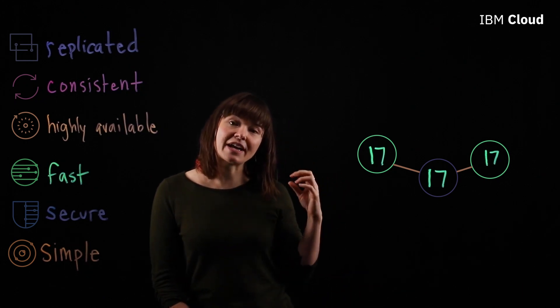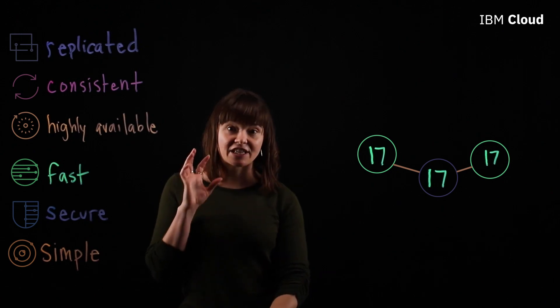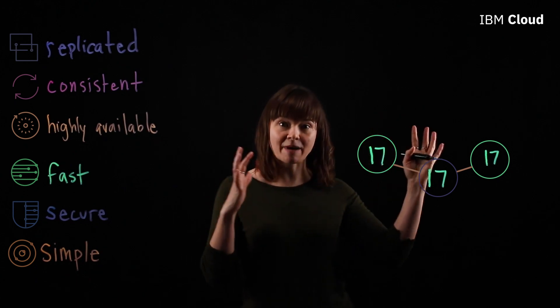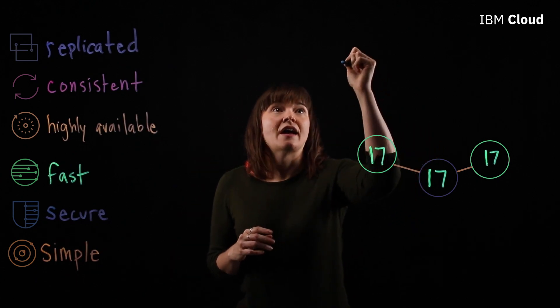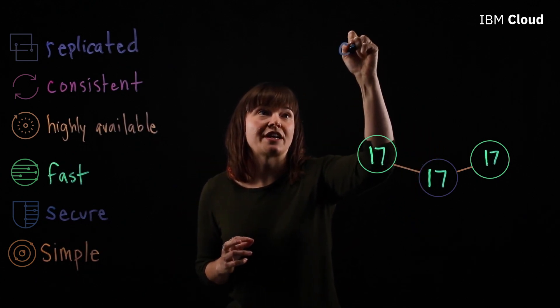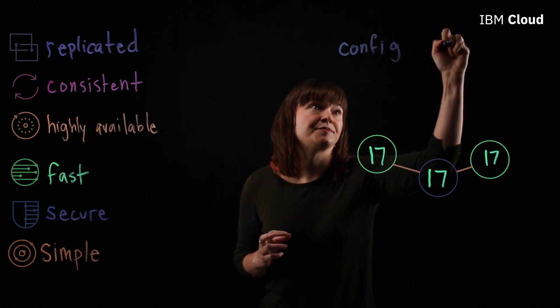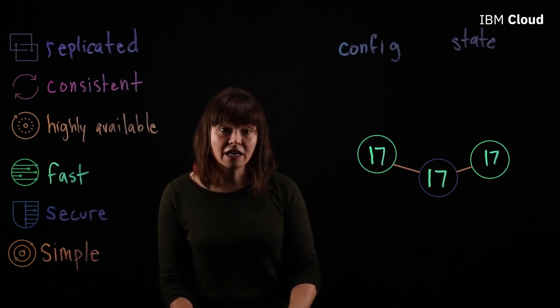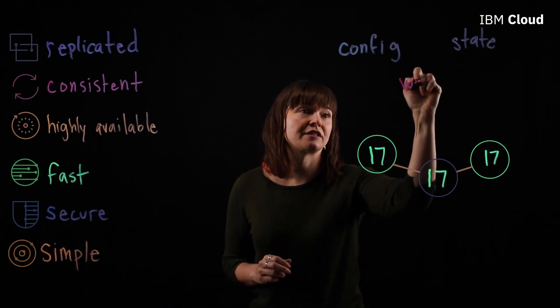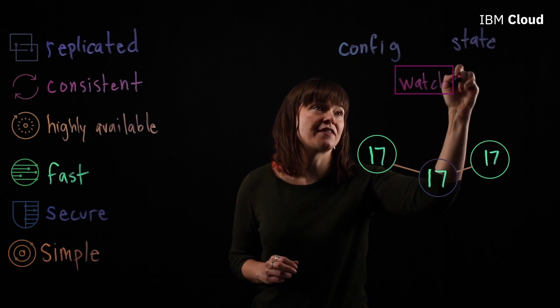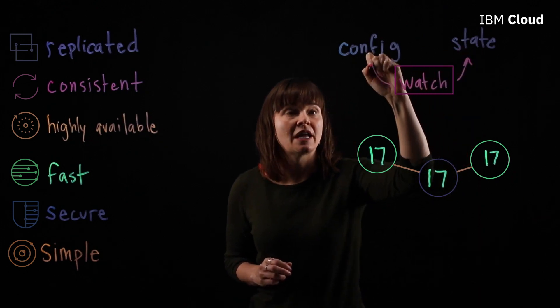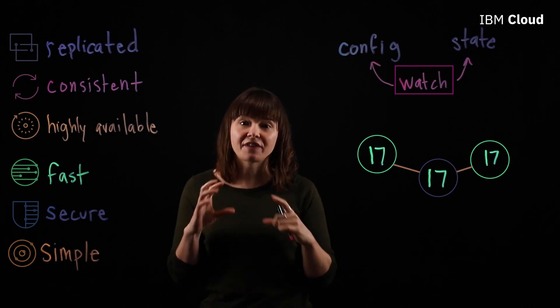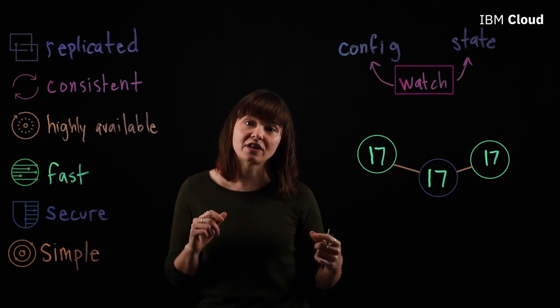So the other thing to talk about in etcd that's important is the watch function. Kubernetes leverages this. So as I talked about at the beginning, etcd stores Kubernetes configuration data and its state data. So etcd can use this watch function to compare these to each other. If they ever go out of sync, etcd will let the Kubernetes API know and the Kubernetes API will reconfigure the cluster accordingly.